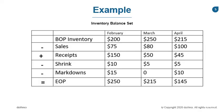February's end of period inventory of $250 becomes our beginning of period for March. We subtract sales of $80, add receipts of $50, and subtract shrink of $5. With no markdowns in March, we end the period at $215. This then becomes April's beginning of period, and so on, as we go through the months noting the movement of inventory over time.